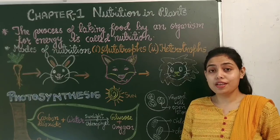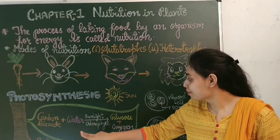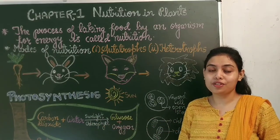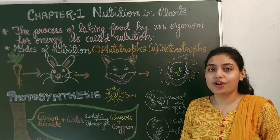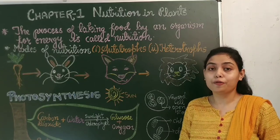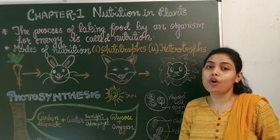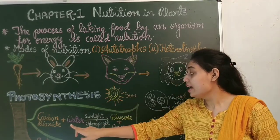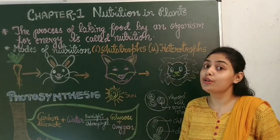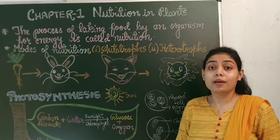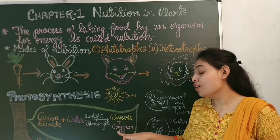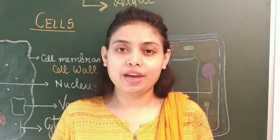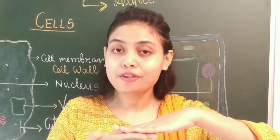Let us understand the process of photosynthesis through a diagram. Photosynthesis occurs in green leaves. Why in green leaves? Because leaves have a green substance called chlorophyll. Chlorophyll helps to trap the sunlight. The second ingredient required for photosynthesis is water. Plants absorb water for photosynthesis through roots. Plant uses carbon dioxide and water in the presence of sunlight to produce glucose, and glucose is the form of energy for the plants. The by-product produced during photosynthesis is oxygen, which is vital for all other living organisms. A leaf releases oxygen in the air through tiny pores or holes present on the lower surface of the leaf called stomata.